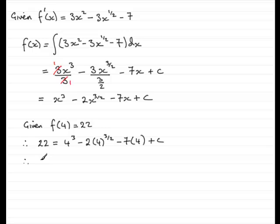So, we've got 22 equals, and here we've got 64 minus. Now, 4 to the power 3 over 2, that means we do the square root of 4 first of all, because this 2 here, square root of 4 is 2. Cubit is now 8 times it by the 2, so that's minus 16. Then, we've got minus 28 plus that constant c.